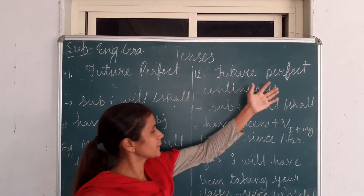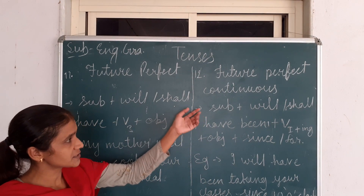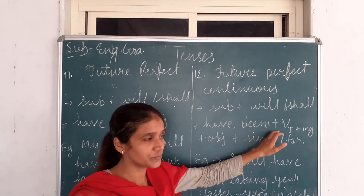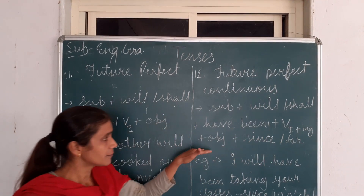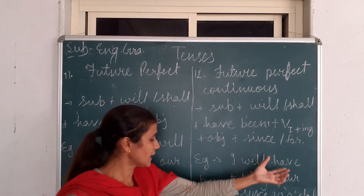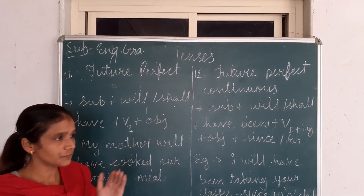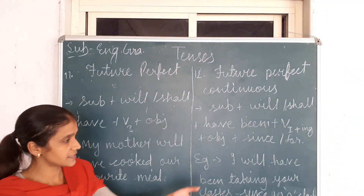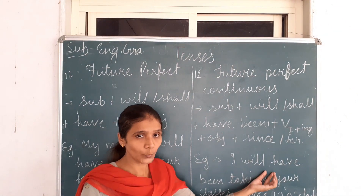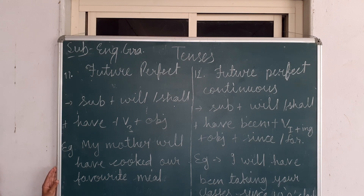Now we will discuss about Future Perfect Continuous Tense. Sentence structure: Subject + will/shall + have been + first form of the verb with ING + Object, and at the end 'since' or 'for.' Example: 'I will have been taking your classes since 10 o'clock.' For negative, after 'will' or 'shall' we use 'not.' I hope you will understand these tenses. Now take a screenshot of this.